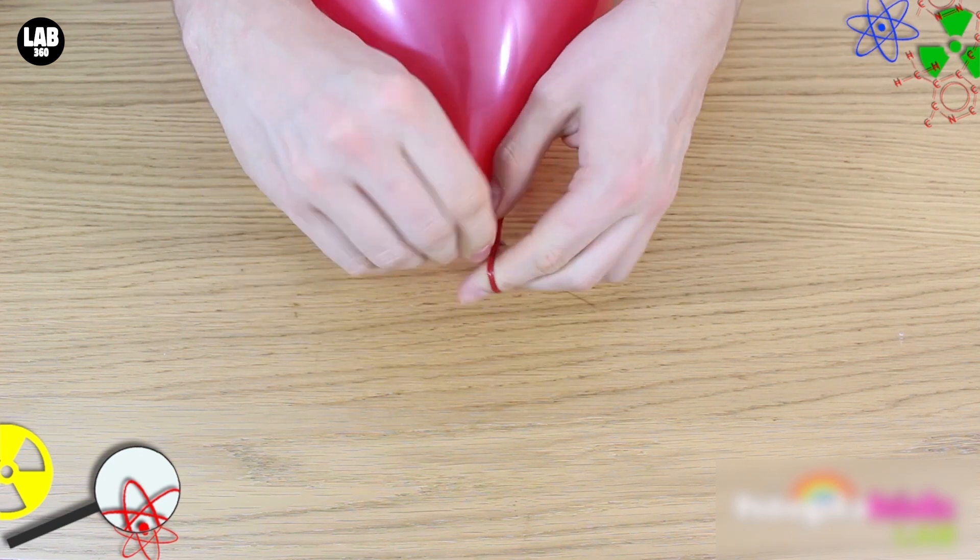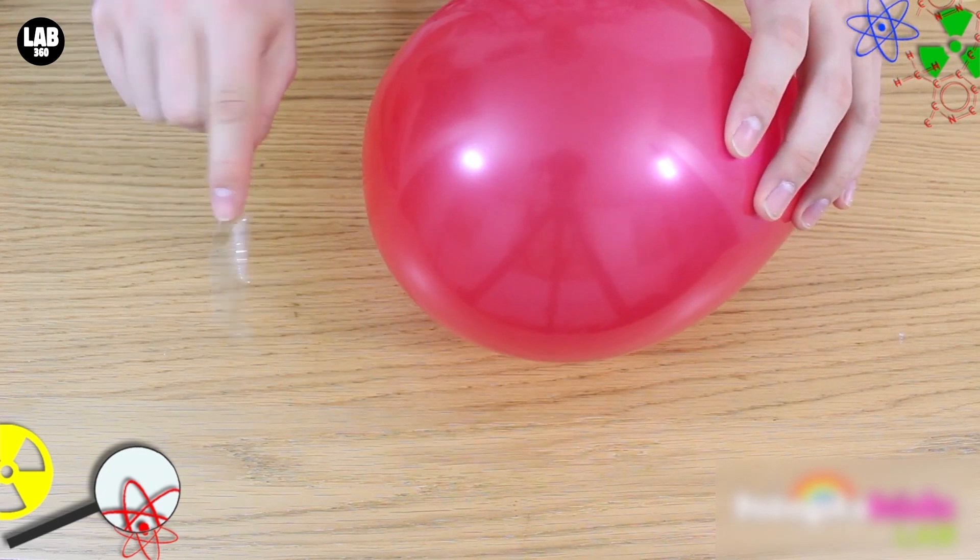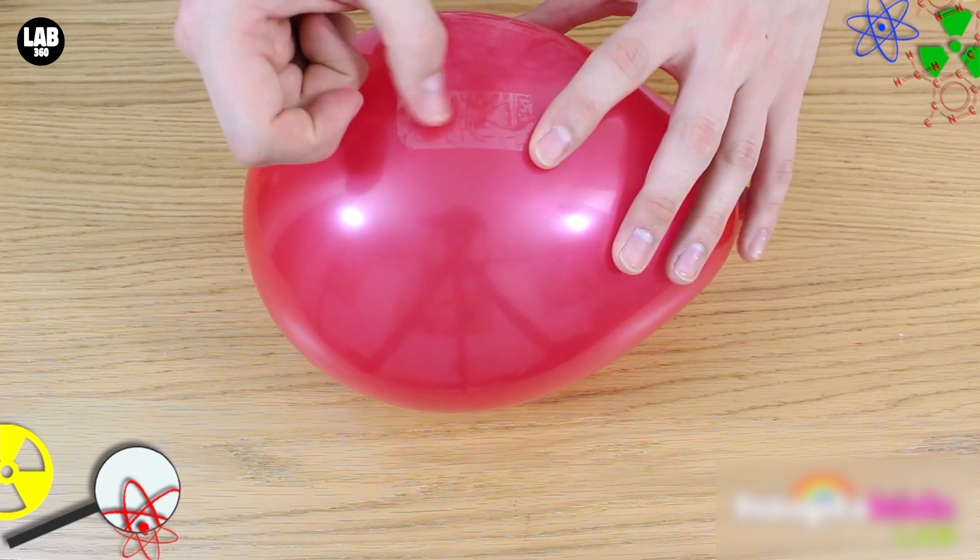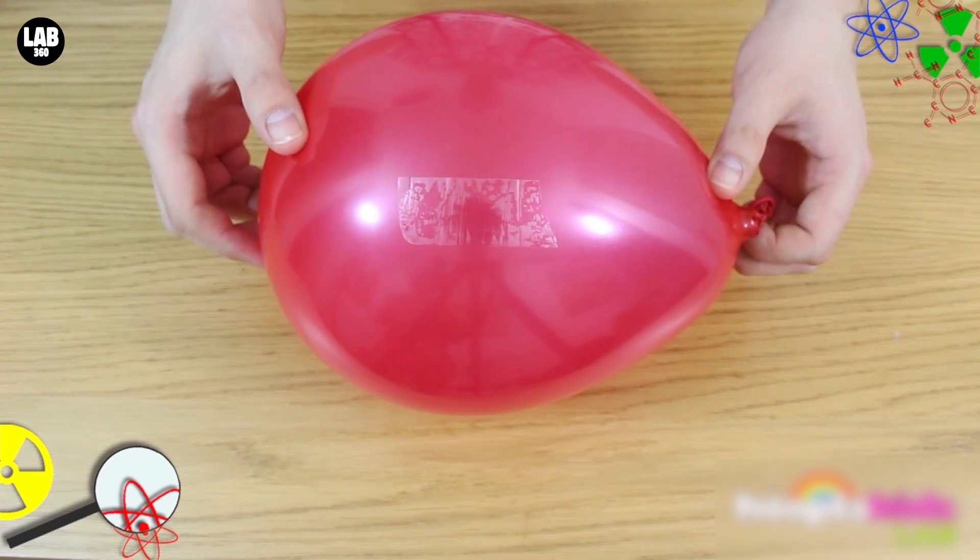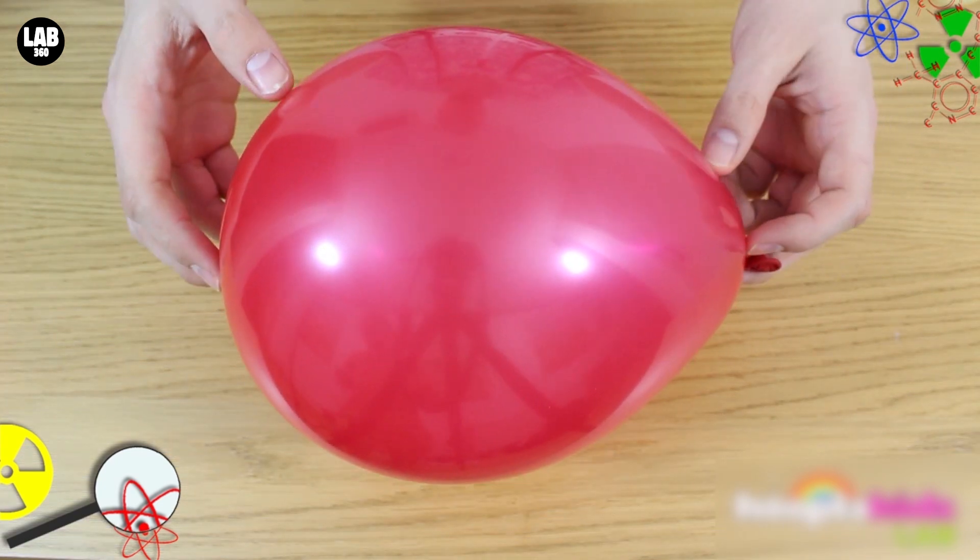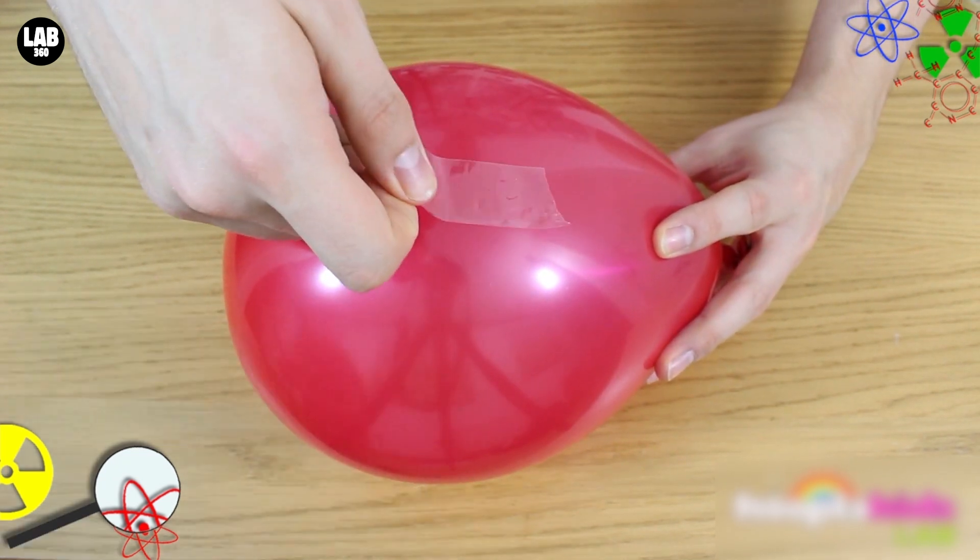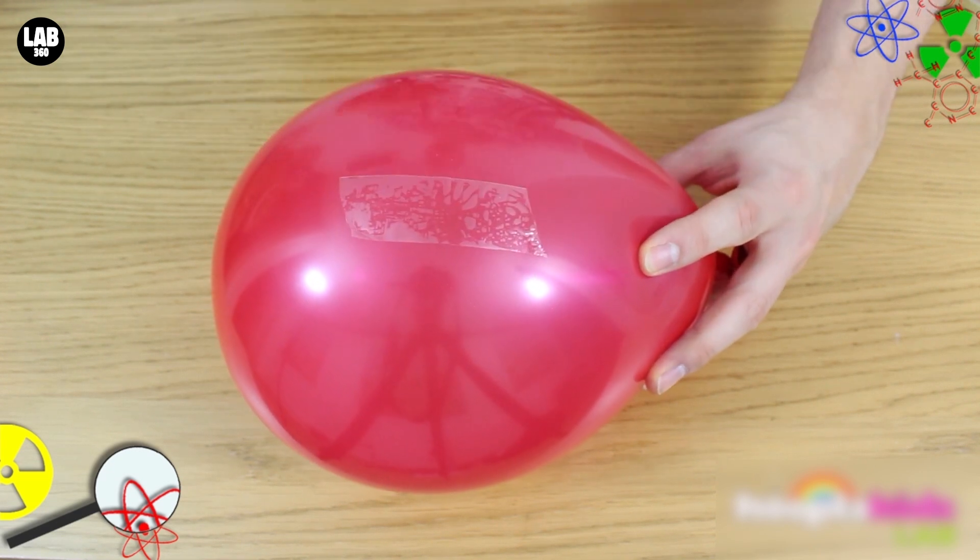Make sure it's completely sealed, then take a small piece of tape and fix it to one side of the balloon. Stick it down nice and firmly, then turn the balloon around, and stick a piece of tape onto the opposite side. This will mean that you have a piece of sellotape on either side of the balloon.